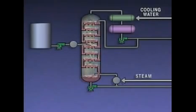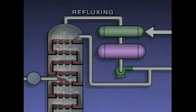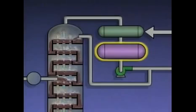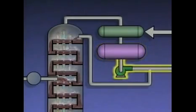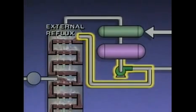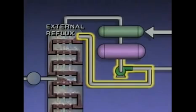Distillation systems use several methods to help maximize the purity of the products. One of these methods is called refluxing. The vapors coming off the top of the tower are condensed in a condenser and then collected in a receiver. Part of the liquid from the receiver is sent to storage or to other units in the plant as the tower's overhead product. The rest of the liquid is pumped back into the top of the tower. The liquid that's reintroduced into the tower is called external reflux.